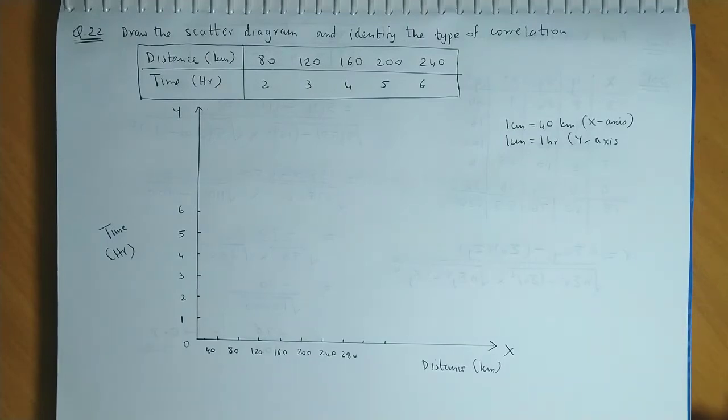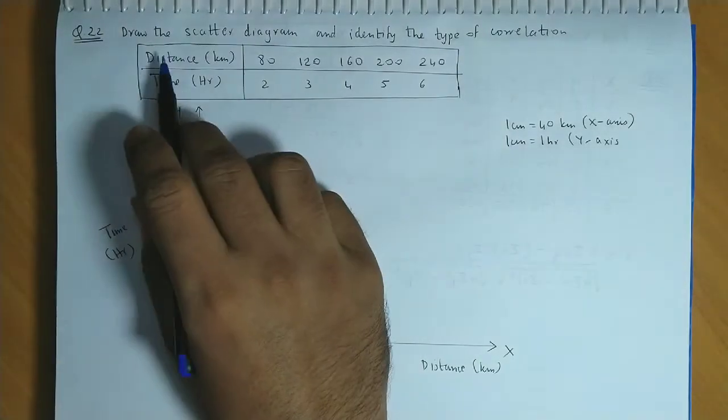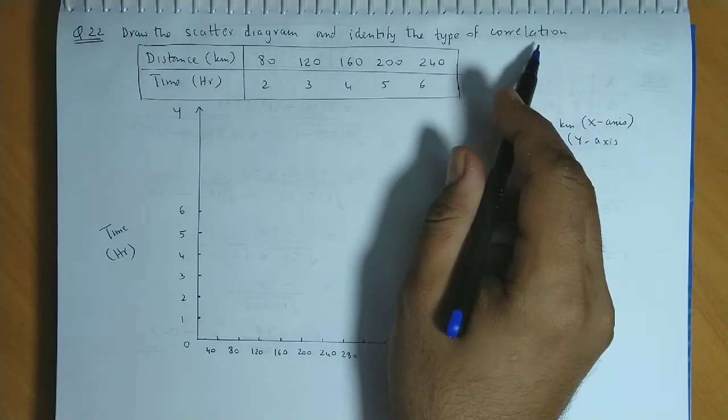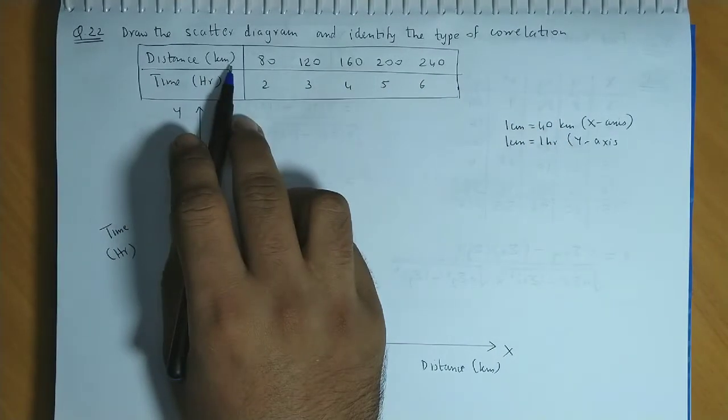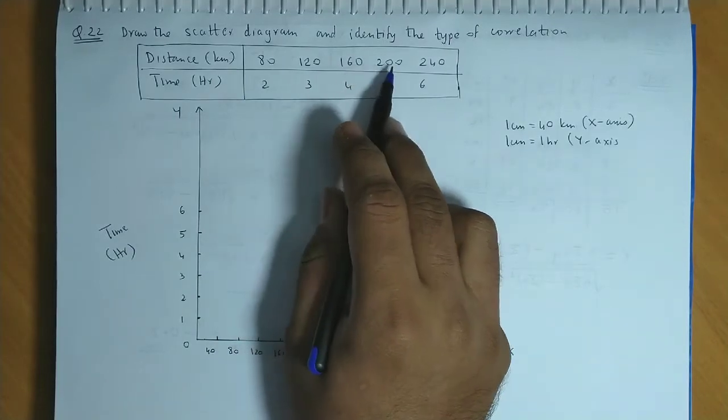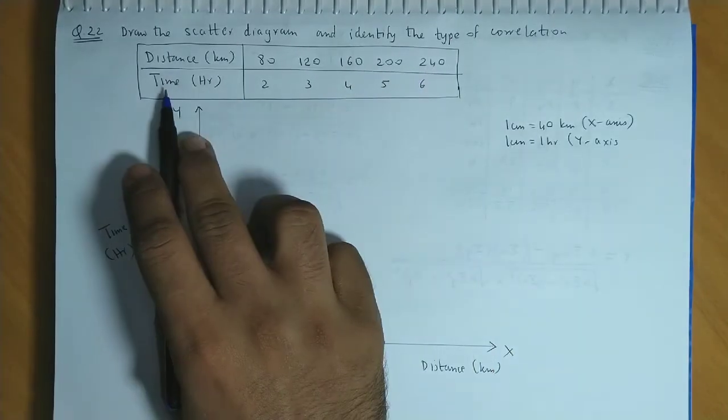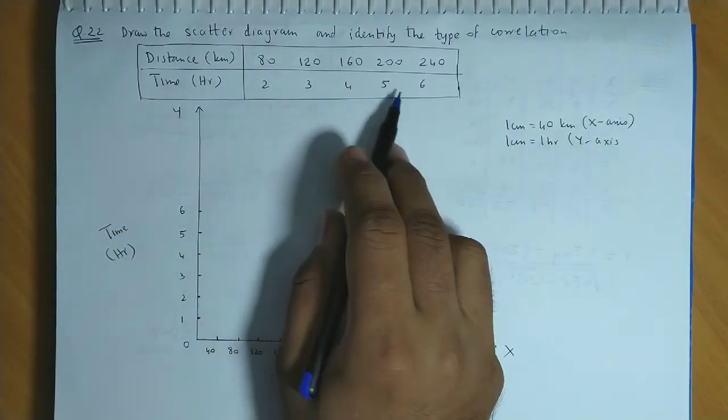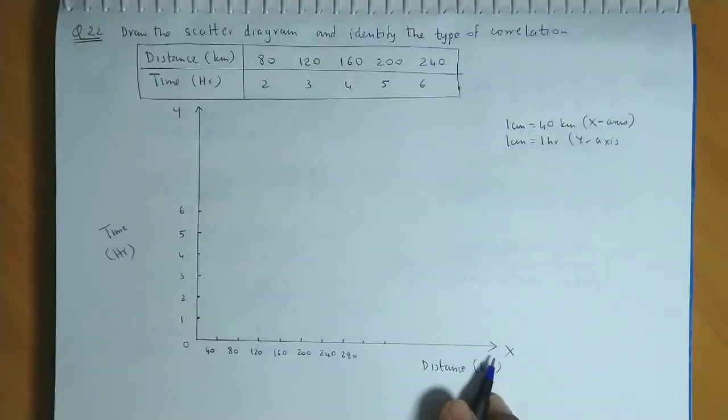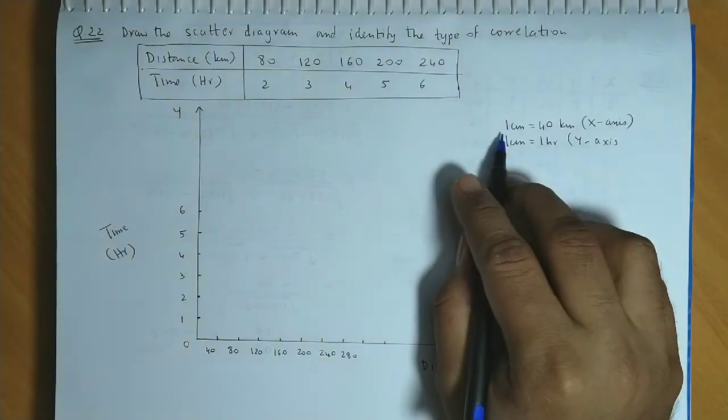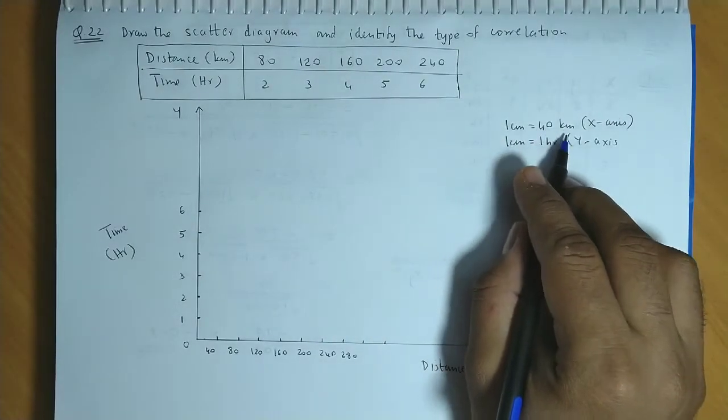Now we take a question related to scatter diagram. Draw the scatter diagram and identify the type of correlation. Distance is given in kilometers: 80, 120, 160, 200, 240. And time in hours is 2, 3, 4, 5, 6. Now distance we have considered on the x-axis, and scale is 1 cm equal to 40 km.